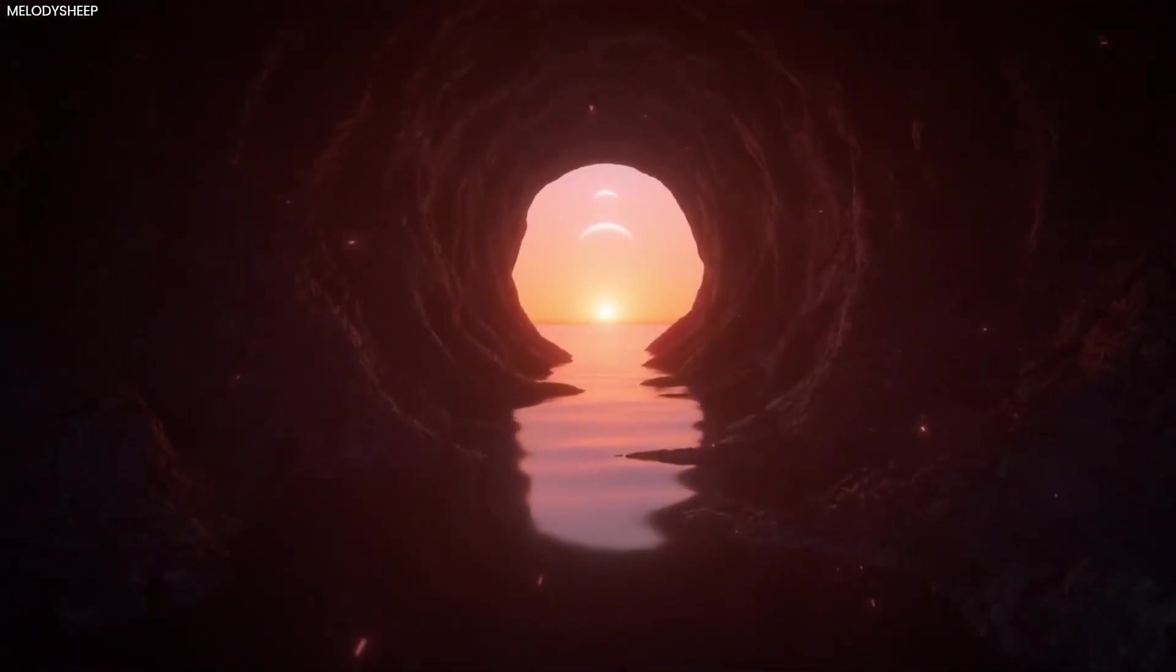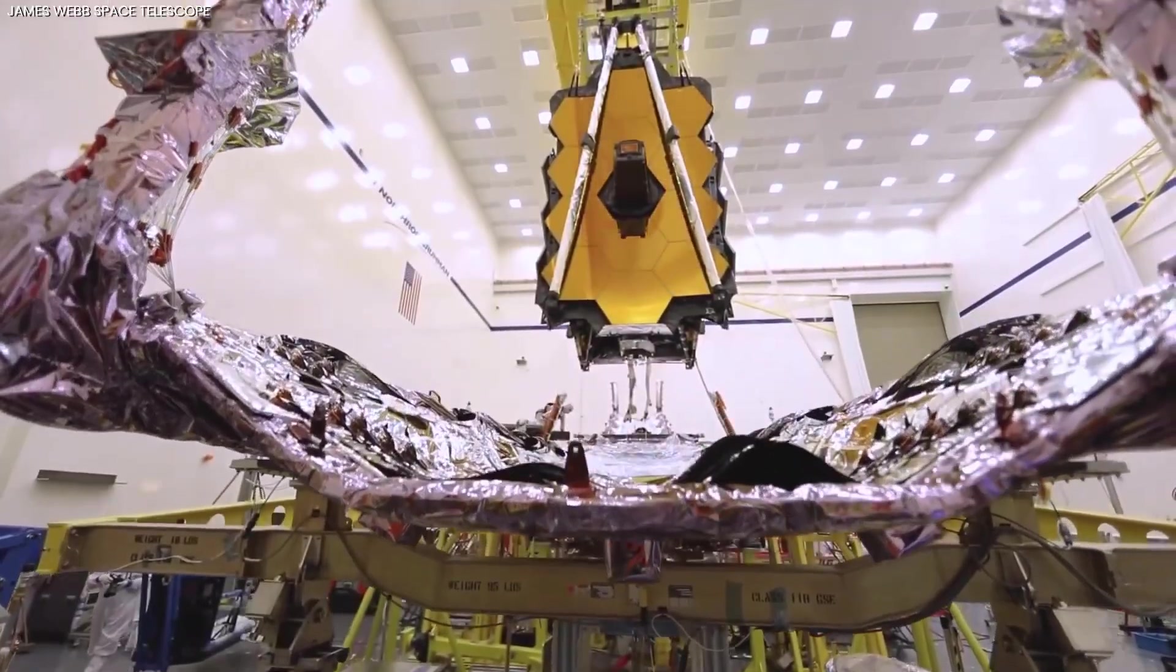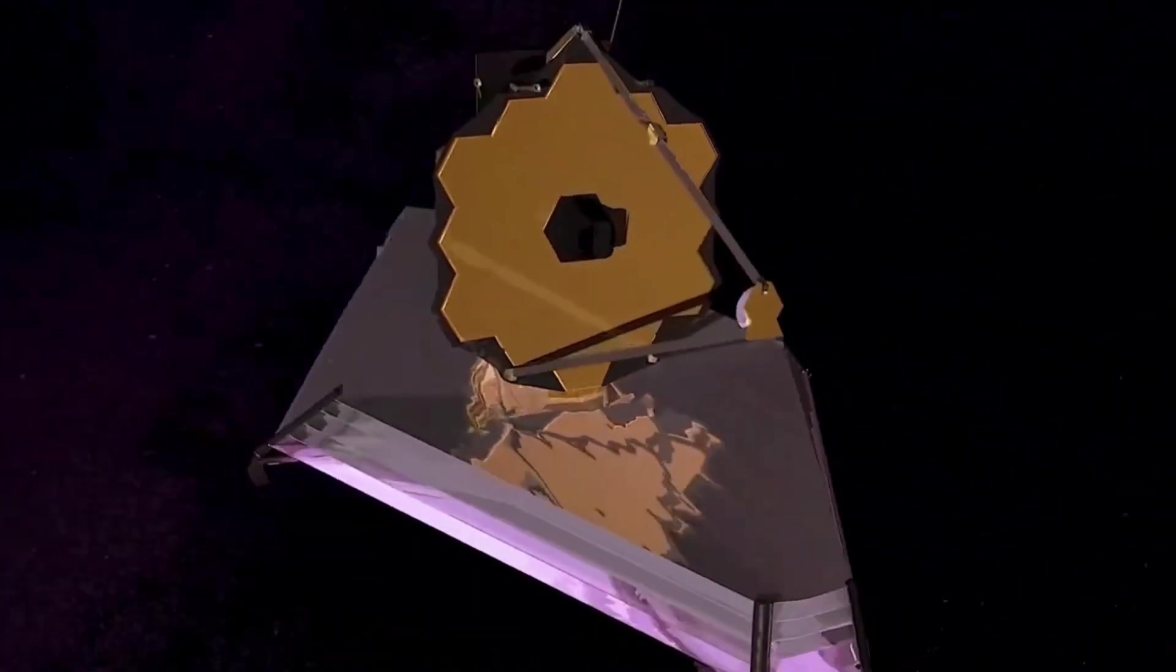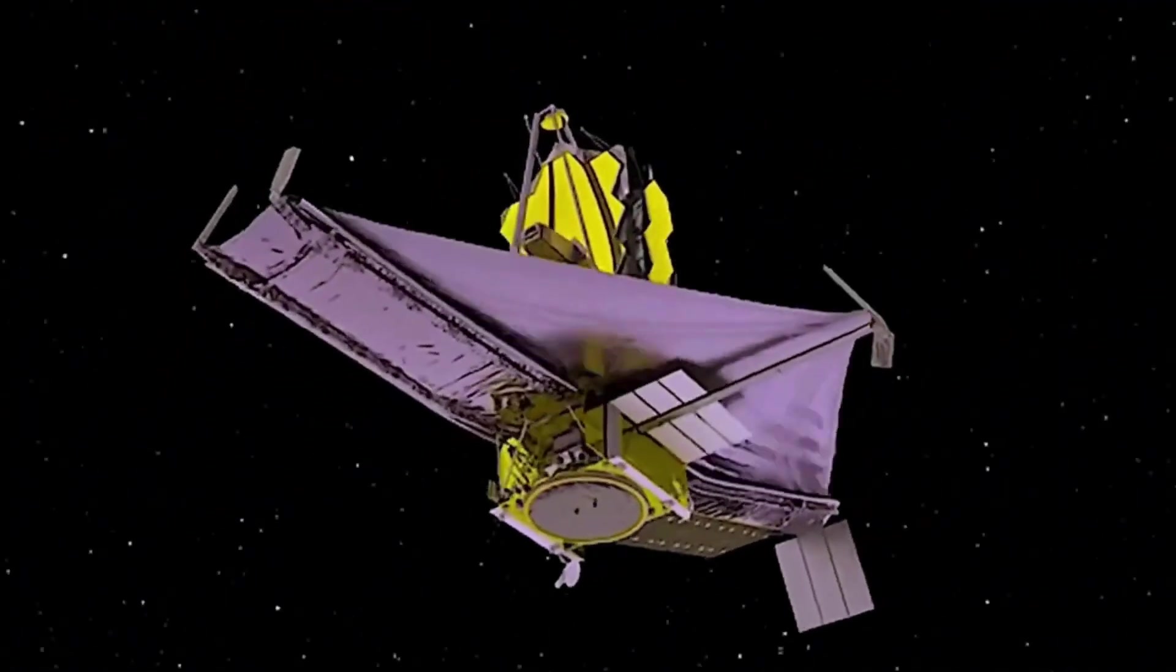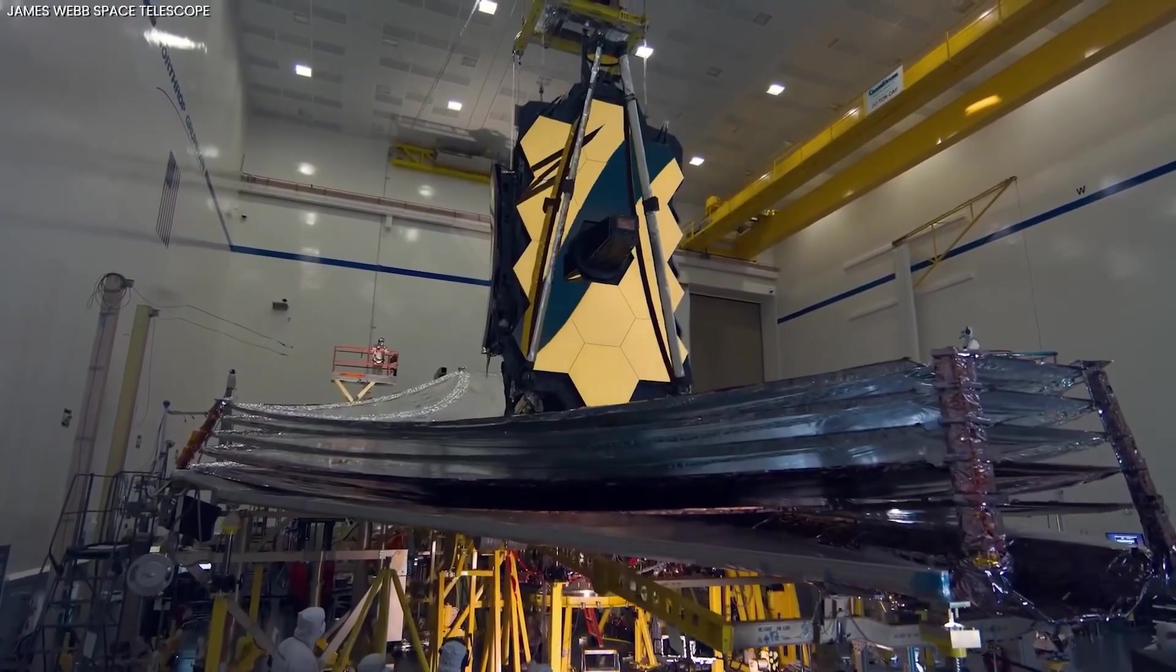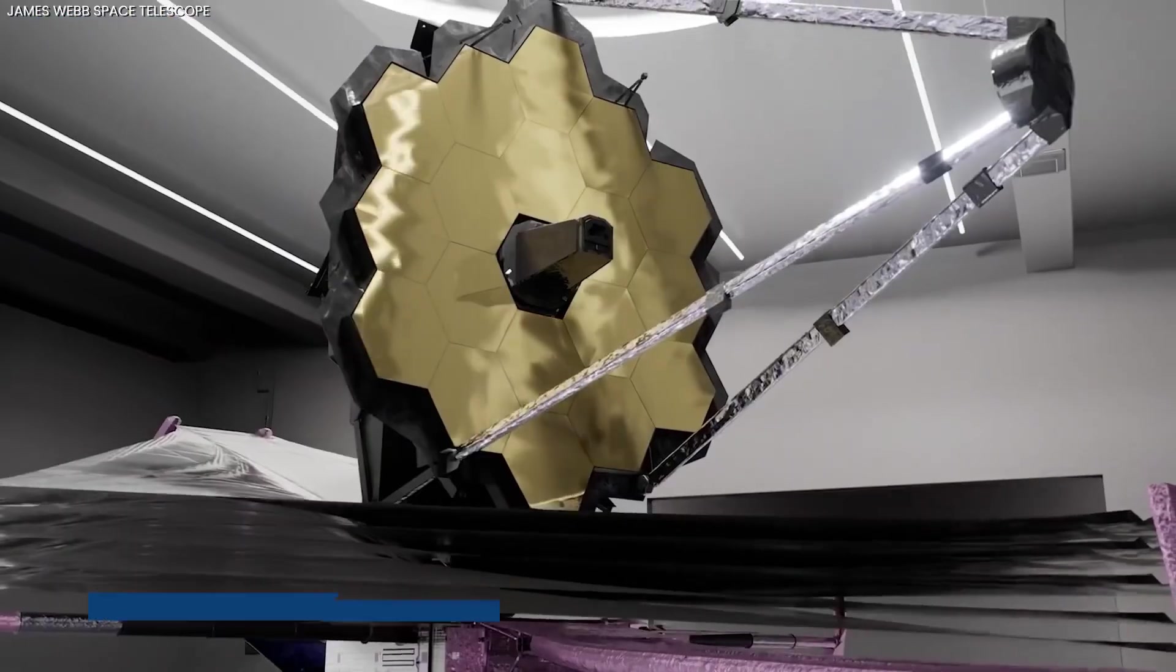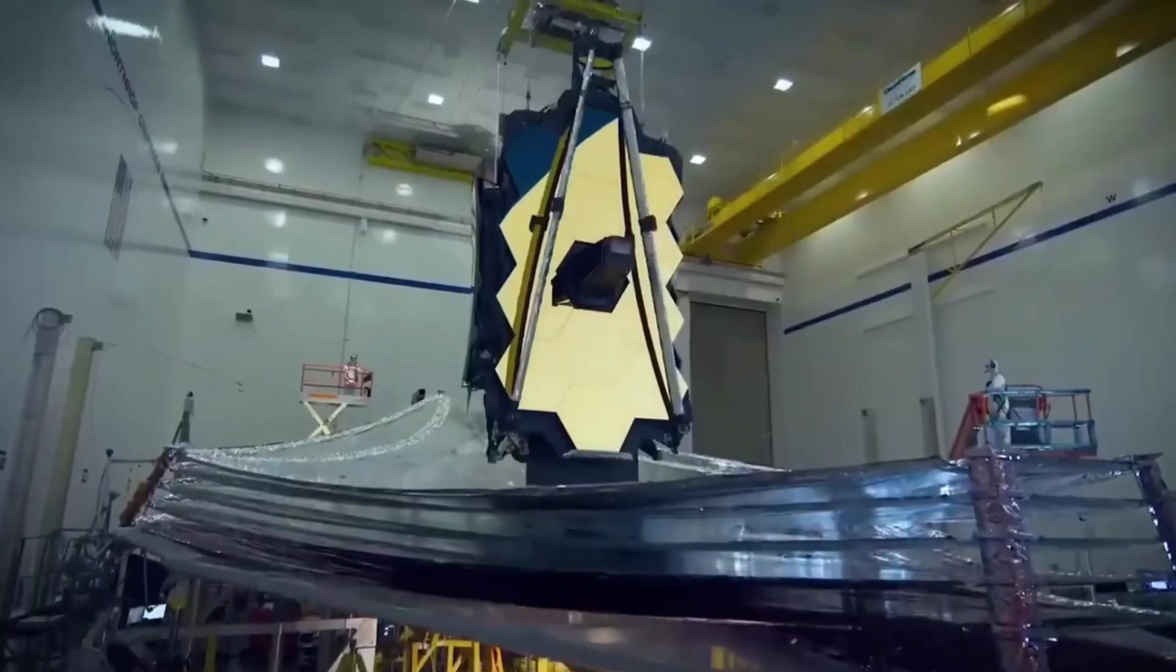SuperString theory studies the tiniest components of the cosmos and has the potential to explain anomalies that are beyond the purview of conventional science. For example, it might clarify the peculiar properties of black holes, which defy the laws of gravity and quantum mechanics. Scientists aim to find answers to important issues regarding the origins and structure of the universe by utilizing the theory to investigate black holes.